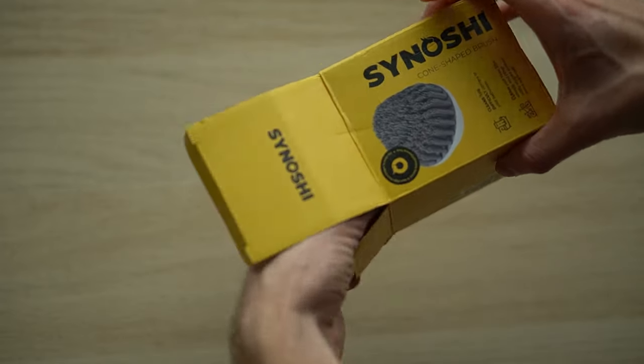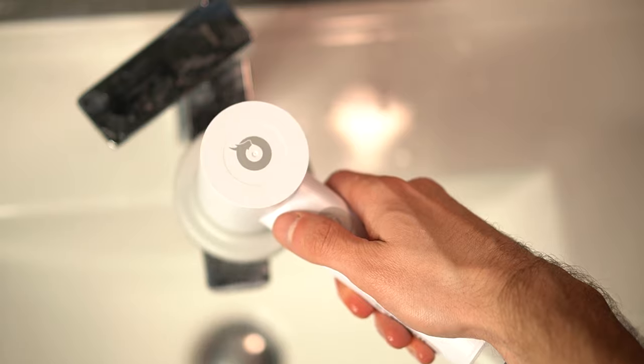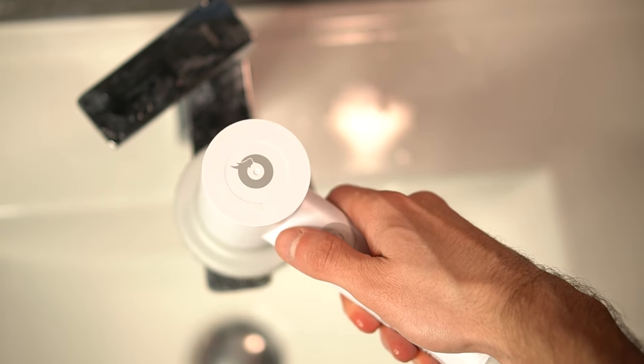I tested Senoshi on three dirty objects. The first one was this mixer that is dirty because of hard water. It was relatively easy to clean. It wasn't perfectly clean though, but I haven't used any chemicals.